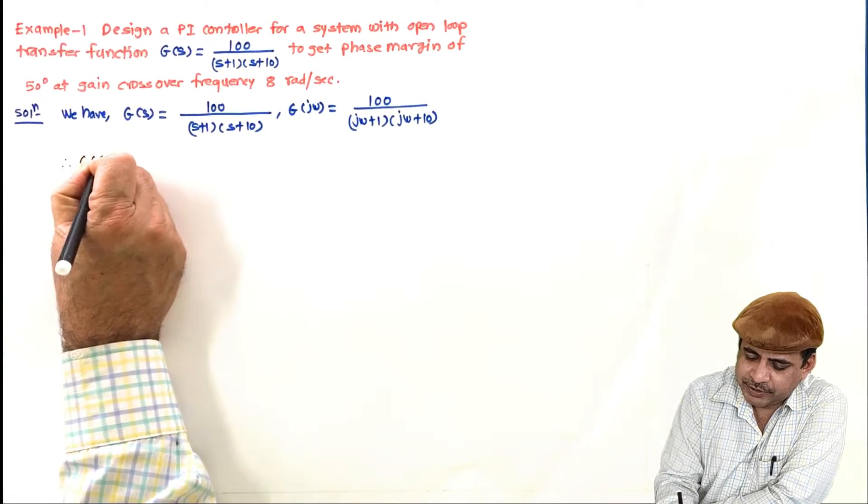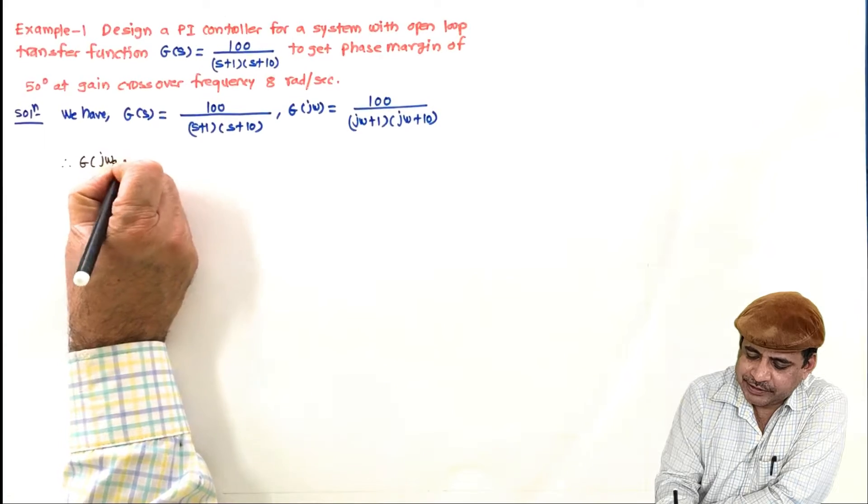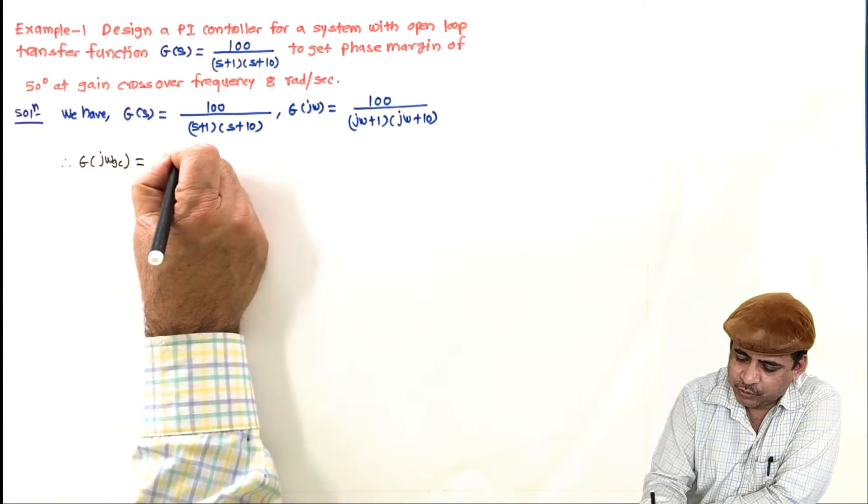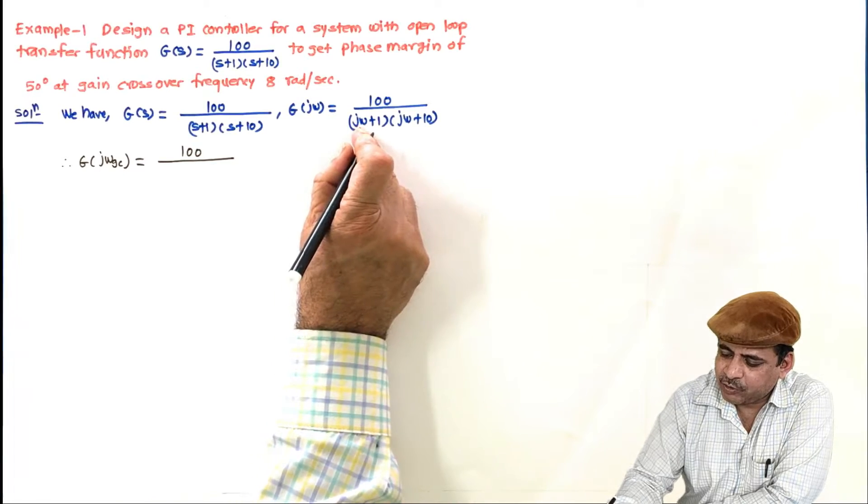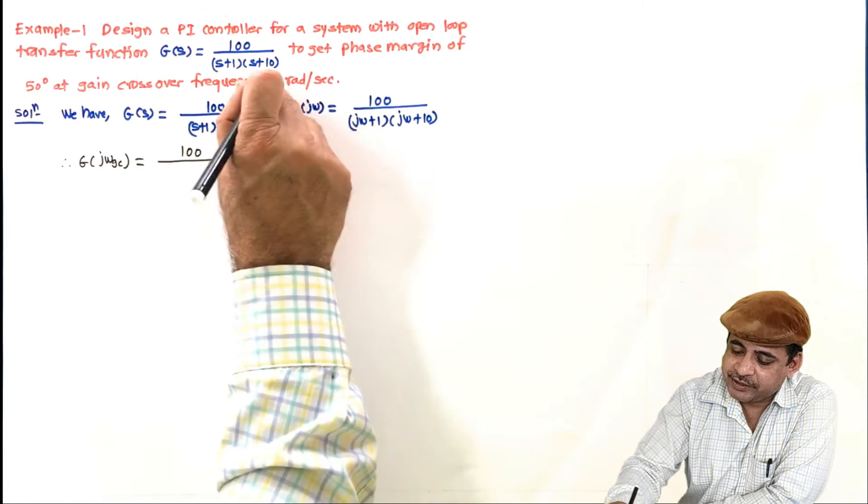And that is what I get. G(jω) at ωgc will be equal to 100 upon, here jω, ω will be ωgc and ωgc is given as 8.